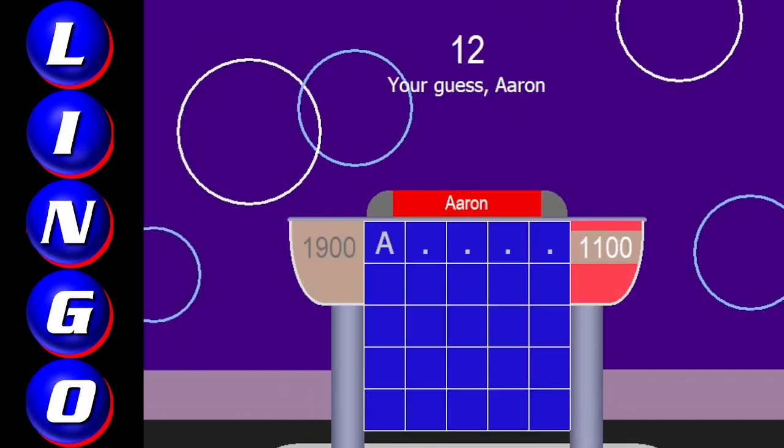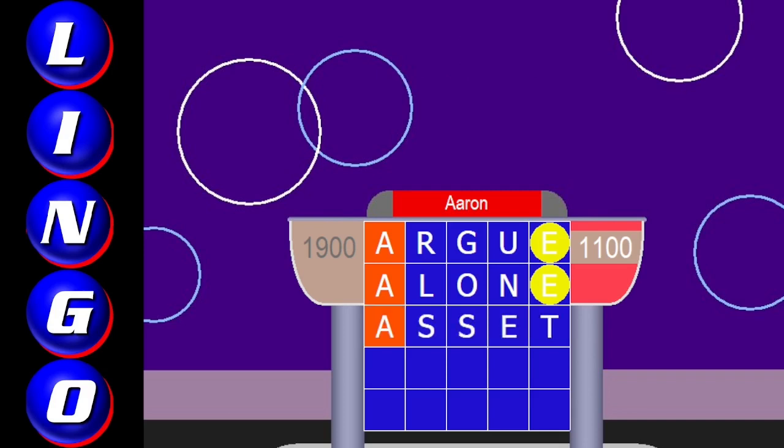Argue. A-R-G-U-E. Nice word. E out of place. Alone. A-L-O-N-E. Okay. Asset. A-S-S-E-T. Nothing there. Hmm. Okay. Arrow. A-R-R-O-W. Just managed to get it out in time, but not at last chance. Okay. Ugh. That's it. It's time. All right. Cedric, I'll give you a bonus letter with a B.